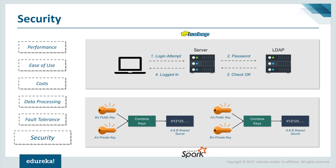Finally, security. Hadoop supports Kerberos for authentication, though it is difficult to handle. It also supports third-party vendors like LDAP for authentication, offers encryption, and HDFS supports traditional file permissions as well as access control lists (ACLs). Hadoop provides service-level authorization, guaranteeing clients have the right permissions for job submission. Spark currently supports authentication via a shared secret. Spark can integrate with HDFS to use HDFS ACLs and file-level permissions, and can also run on Yarn, leveraging Kerberos capabilities.